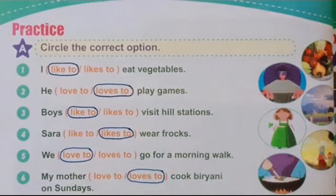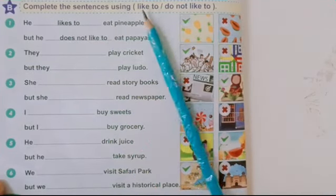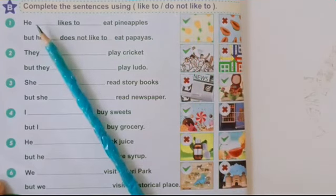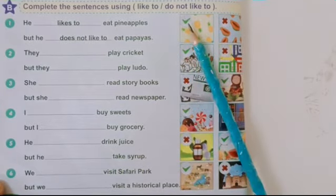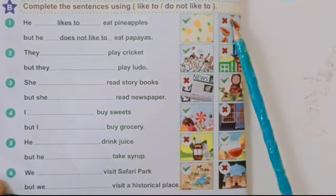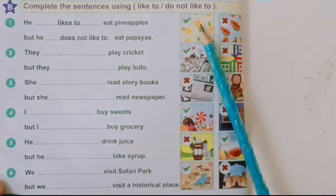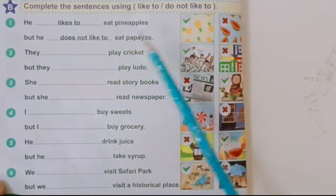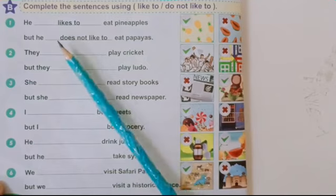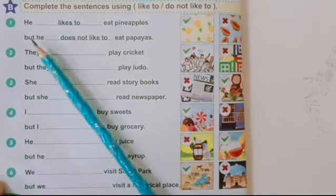Let's move forward to the B activity of practice. For this activity, complete the sentences using 'like to,' 'do not like to,' and look at the pictures. A tick on a picture means a positive sentence, and a cross means a negative sentence. Keep that in mind. First: 'He dash eats pineapples' — he likes to eat pineapples, but he does not like to eat papayas. There is a cross, so we use 'but' to connect the positive and negative sentences.